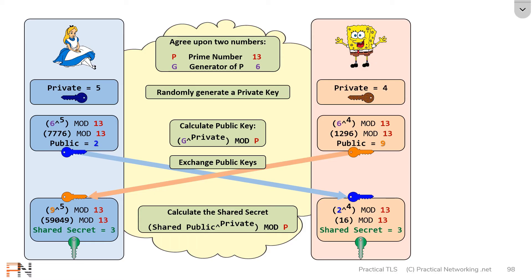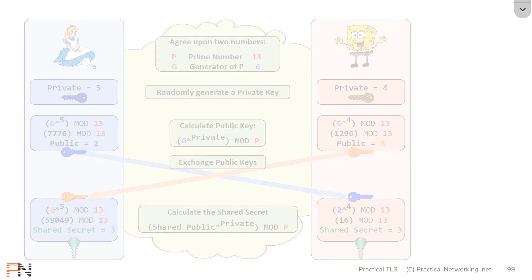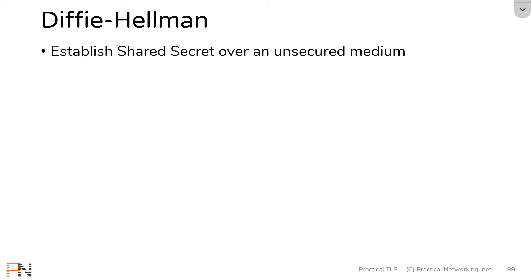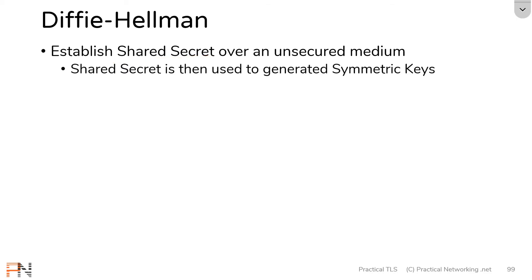That is the Diffie-Hellman exchange. It allows two parties to establish a shared secret over an unsecured medium. That shared secret is then used to generate any amount of symmetric keys. Typically the shared secret is not directly used as a symmetric key but as the seed value to calculate an unlimited amount of symmetric keys for symmetric encryption, or HMAC keys for data integrity.